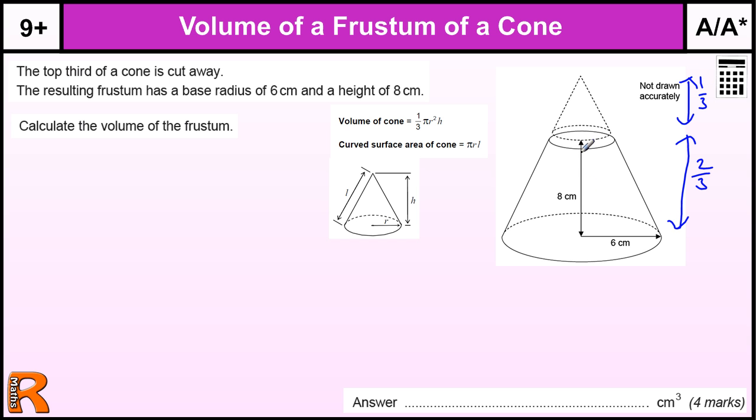So, if that's 2 thirds is 8, 1 third is going to be 4, and therefore the whole thing is 12 high, but we also need to work out the radius of this small cone.